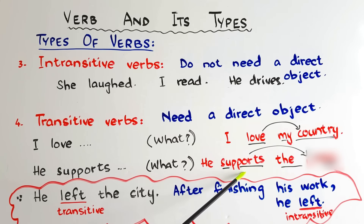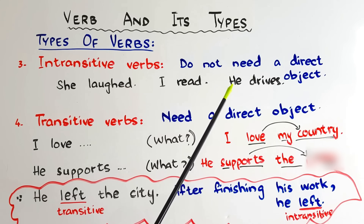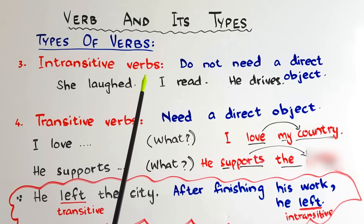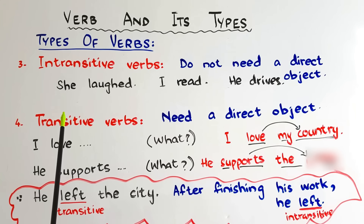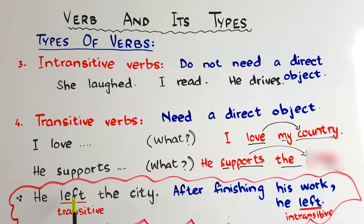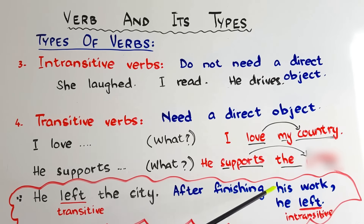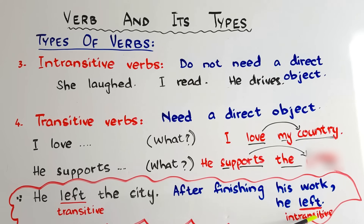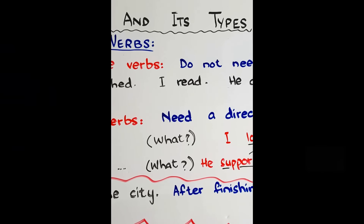See one more example: 'he supports' — he supports what? The thought is not completed. 'He supports the poor' — so 'support' is a transitive verb because it needs an object. Sometimes a verb can be both transitive and intransitive. Like 'he left the city' — 'left' is transitive. But in 'after finishing his work, he left,' the verb 'left' gives complete sense without an object, so it is intransitive.